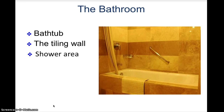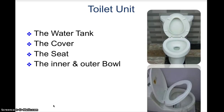The bathroom is also an important feature of the bedroom. The bathroom comprises of a bathtub, the tiling wall, and the shower area. The toilet unit is comprised of the water tank, the toilet seat cover, the toilet seat, the outer bowl, and the inner bowl. We definitely need to know the individual parts of every single component of the room, which would enable us to communicate with maintenance in case of any engineering services required.